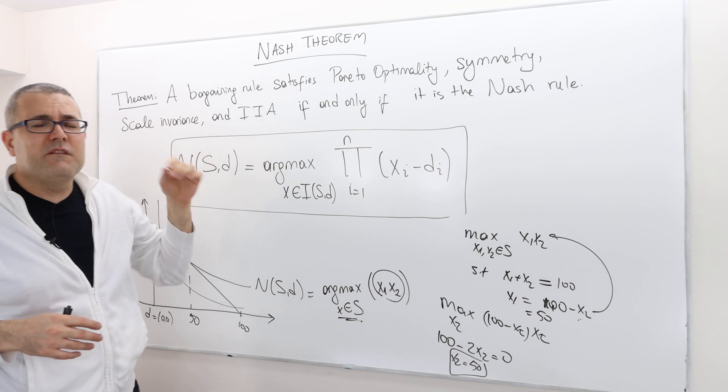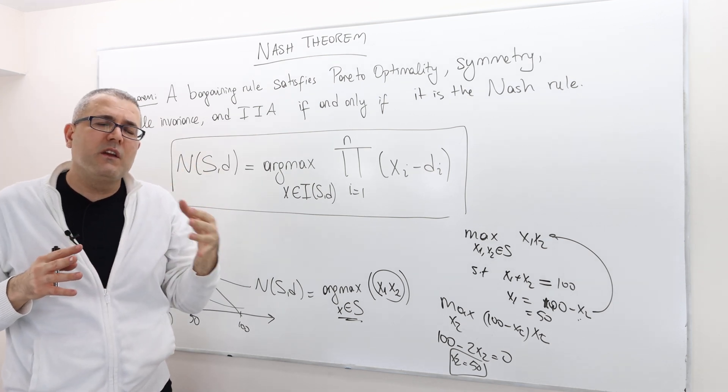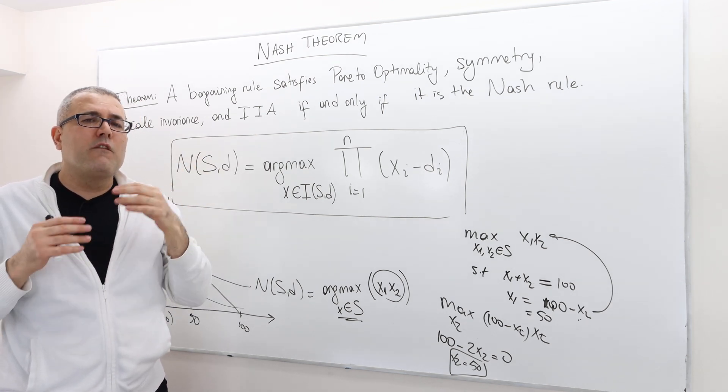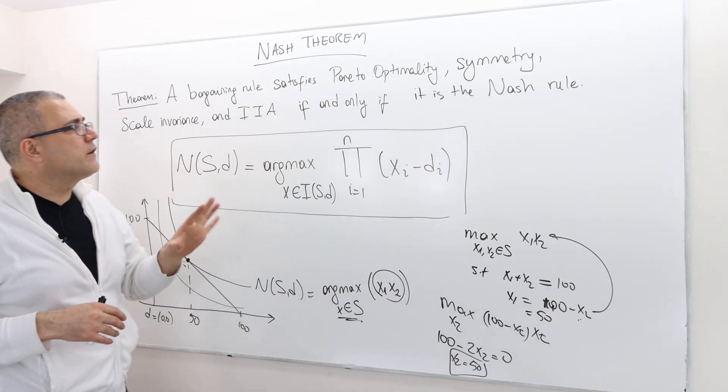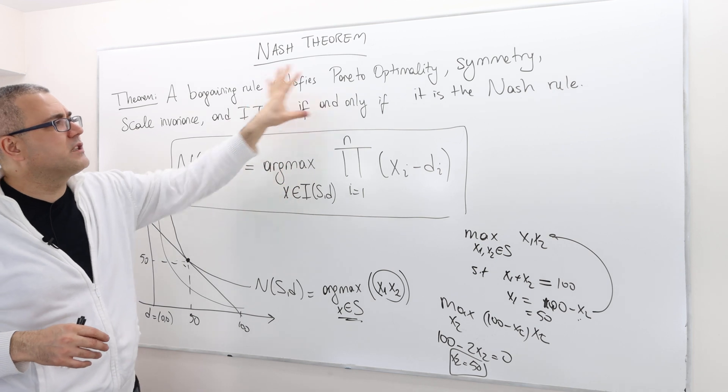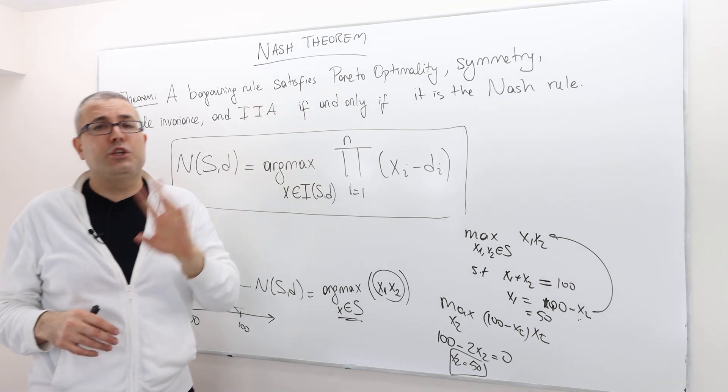But remember, Pareto-optimality, symmetry, scale invariance, IIA, these properties must be satisfied for all possible bargaining games. And so, therefore, showing that a rule satisfy those properties is not too straightforward. And this is exactly what we're going to do next.